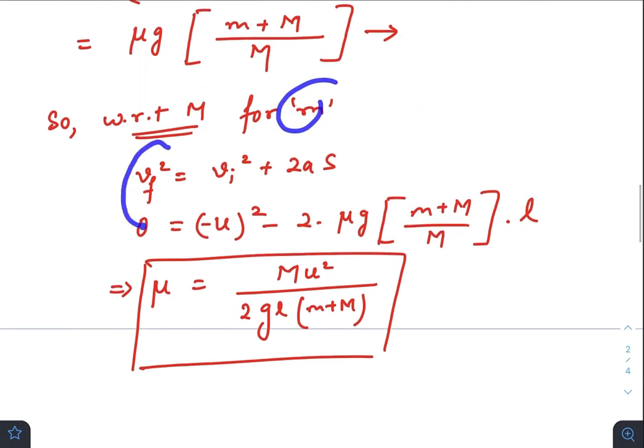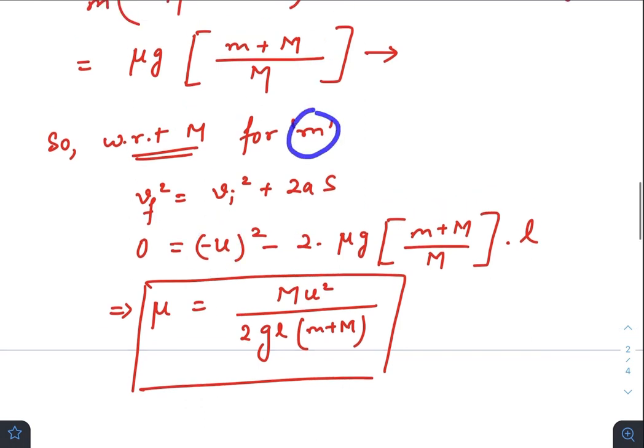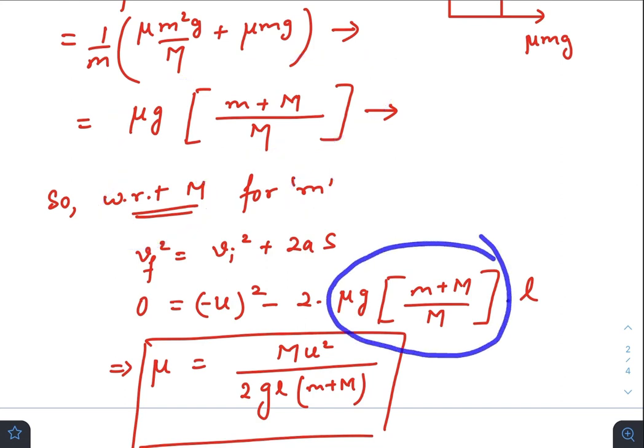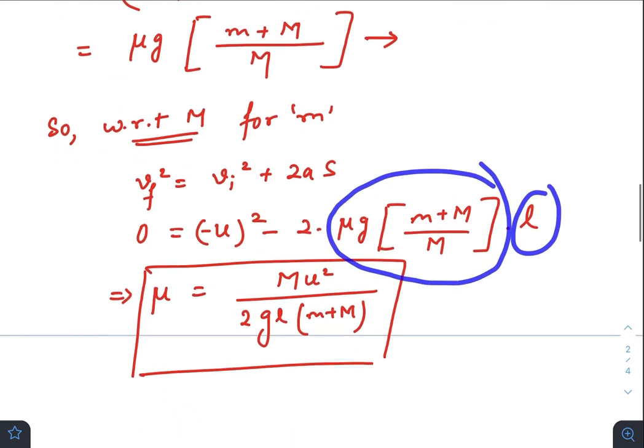So with respect to capital M for small m we can write final speed squared equals to initial velocity squared plus 2AS. So finally 0, initial was u minus 2, acceleration of small m with respect to capital M which is this one, times the displacement.